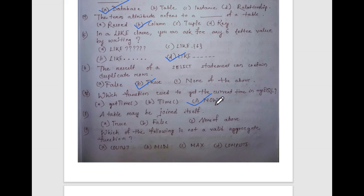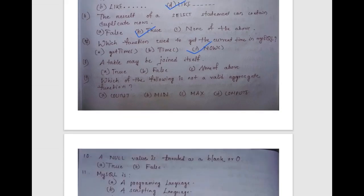NOW() returns the current date and time both. Next question: a table may be joined to itself — true or false? Yes, this is true. A table can join itself.